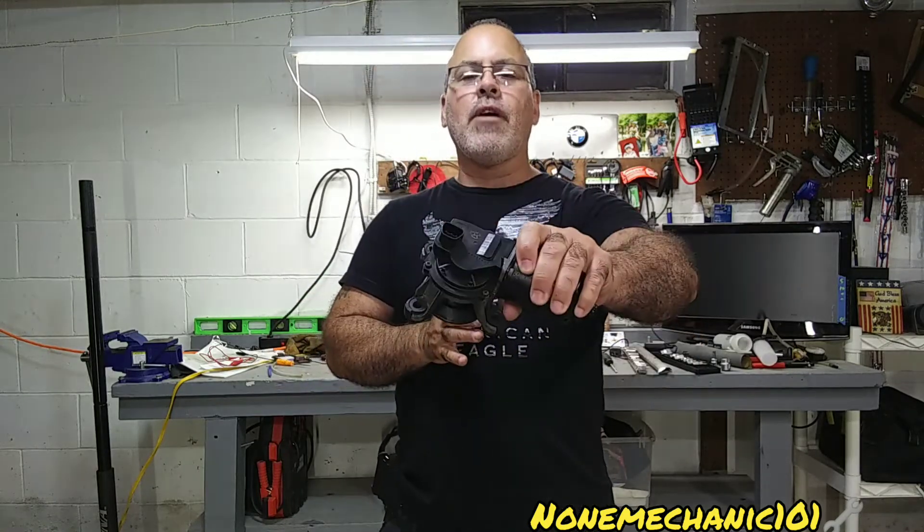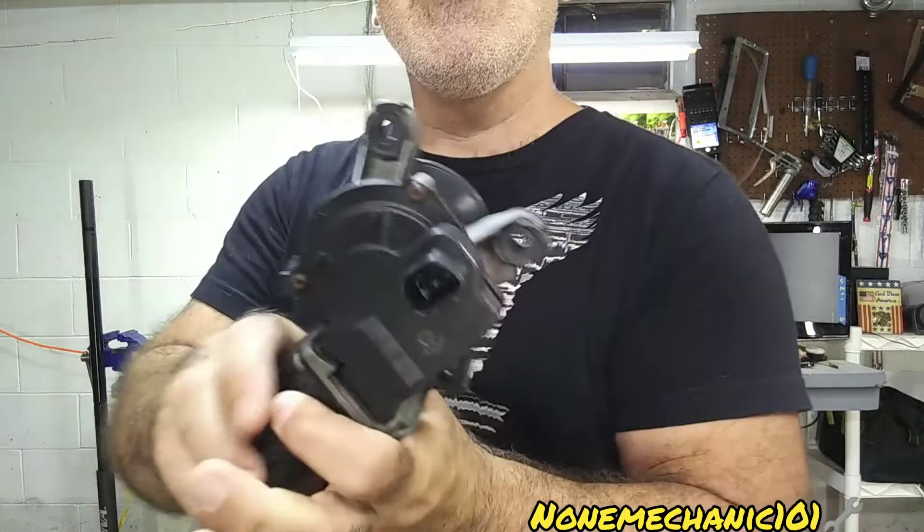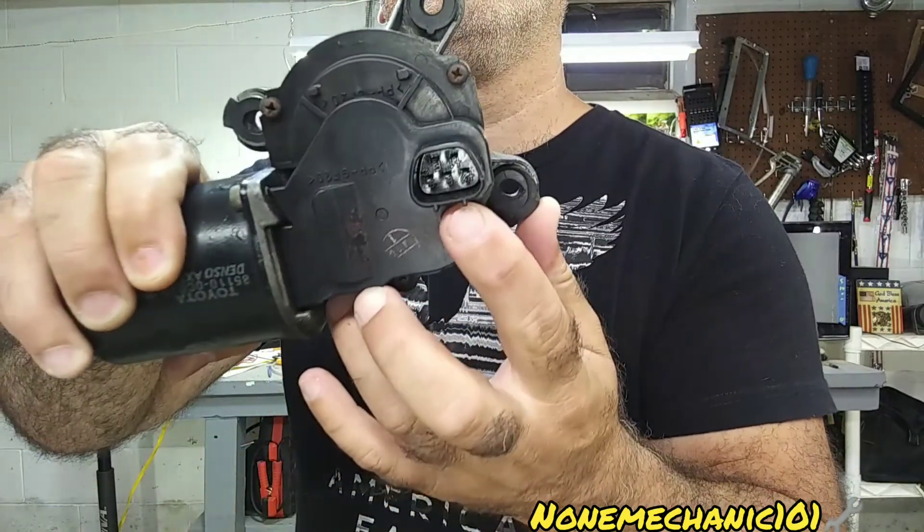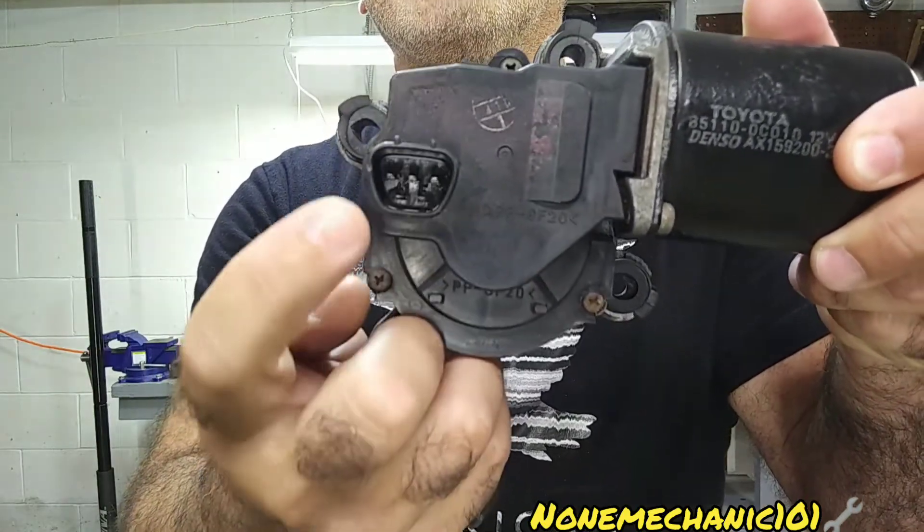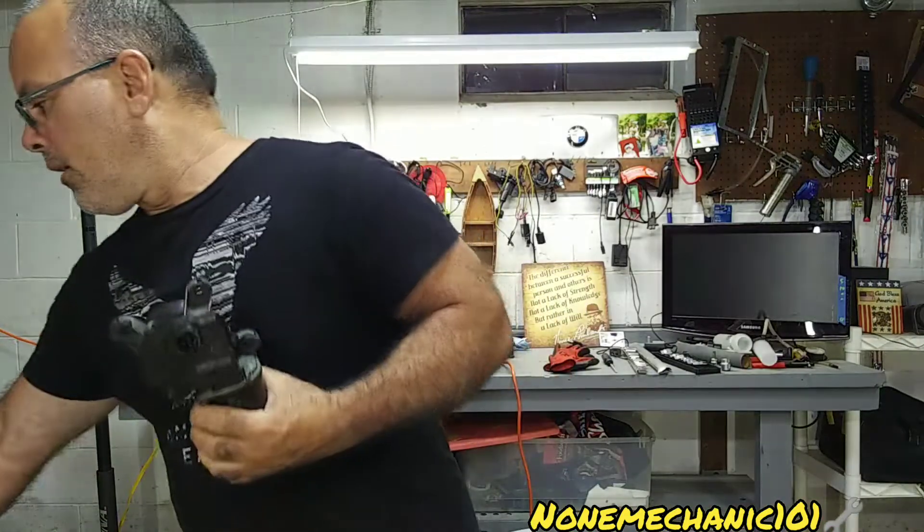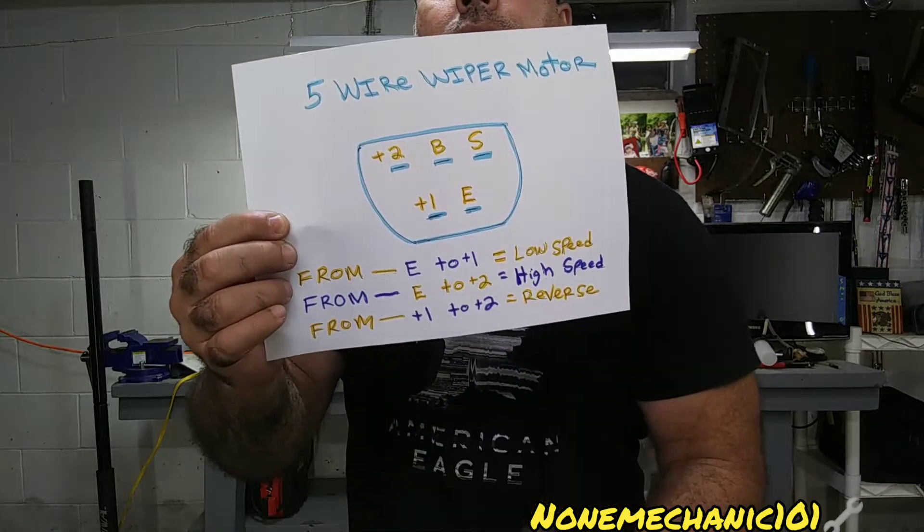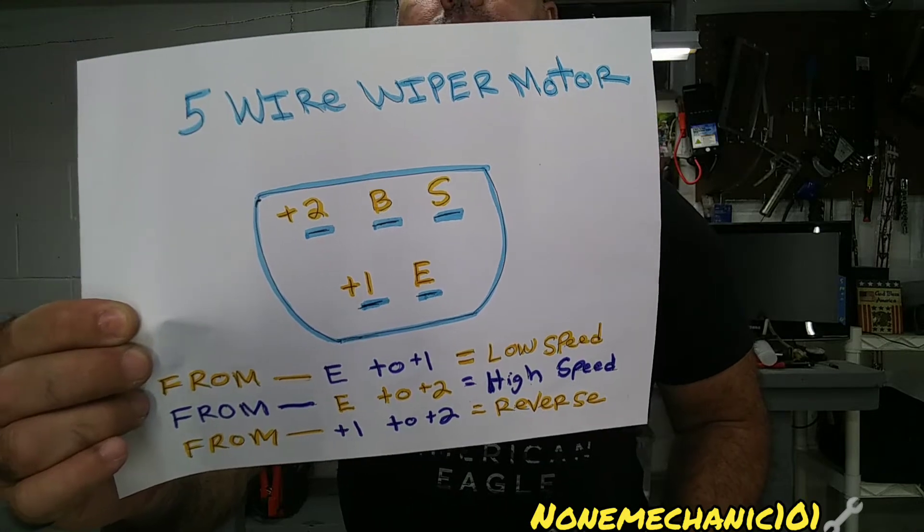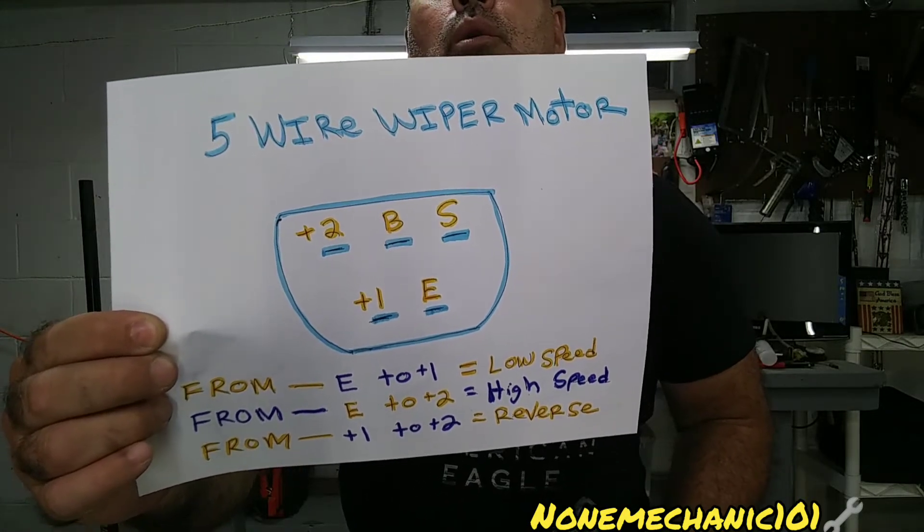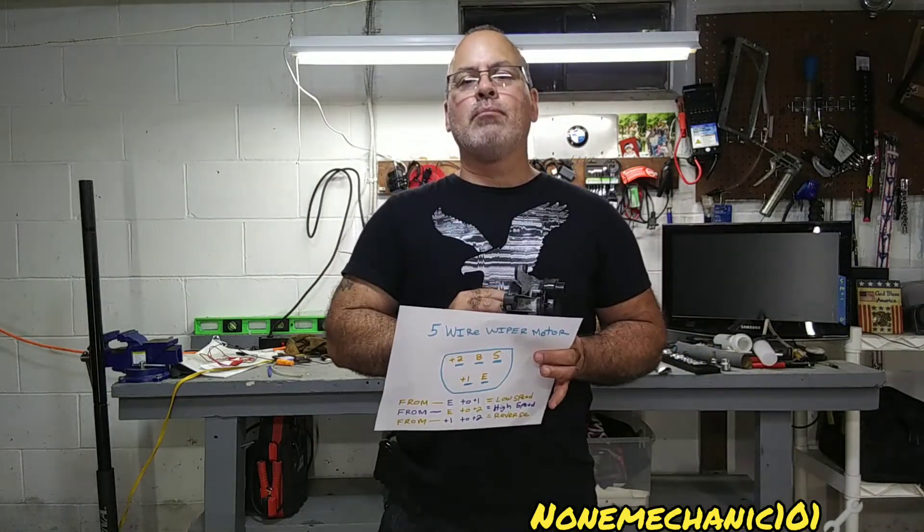If you see right inside here with the connector, there are some numbers in there. You see it has five metals. This is the diagram I did. This is how it looks in there. This is the numbers it has. Like I said before, this is a five-wire wiper motor, so I'm going to show you how to see if your wiper motor is working.